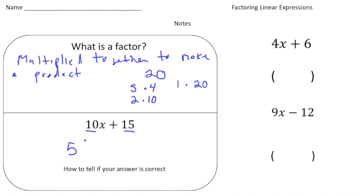And then what you do is you draw parentheses. And because we have a plus sign here, we're going to put a plus in the middle. And you say 5 times what gives us 10x. So 5 times 2x, that will give us 10x. And then we say 5 times what gives us 15, and that's 3. And guess what? We just factored this linear expression because 5 times 2x plus 3 gives us 10x plus 15.